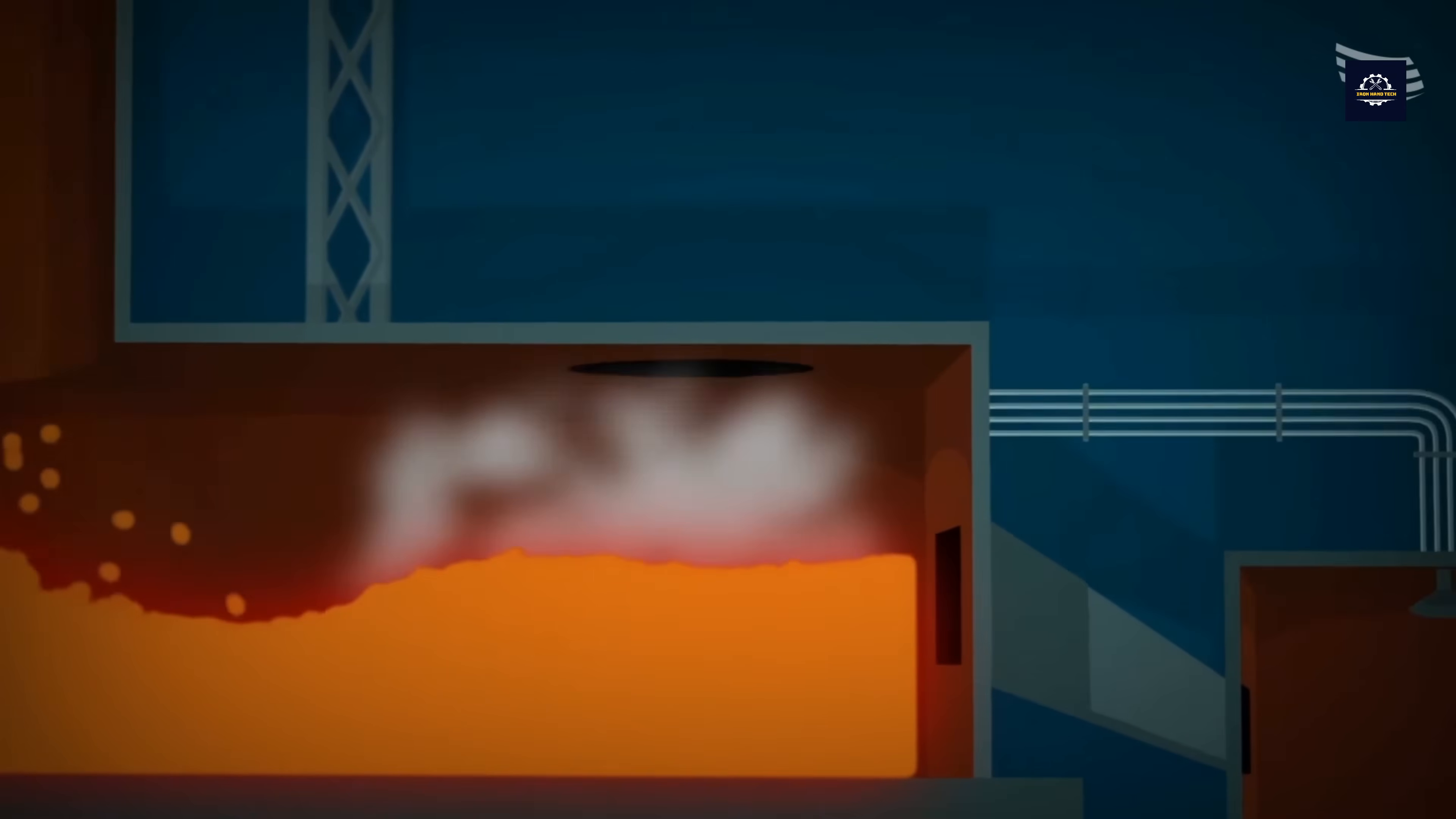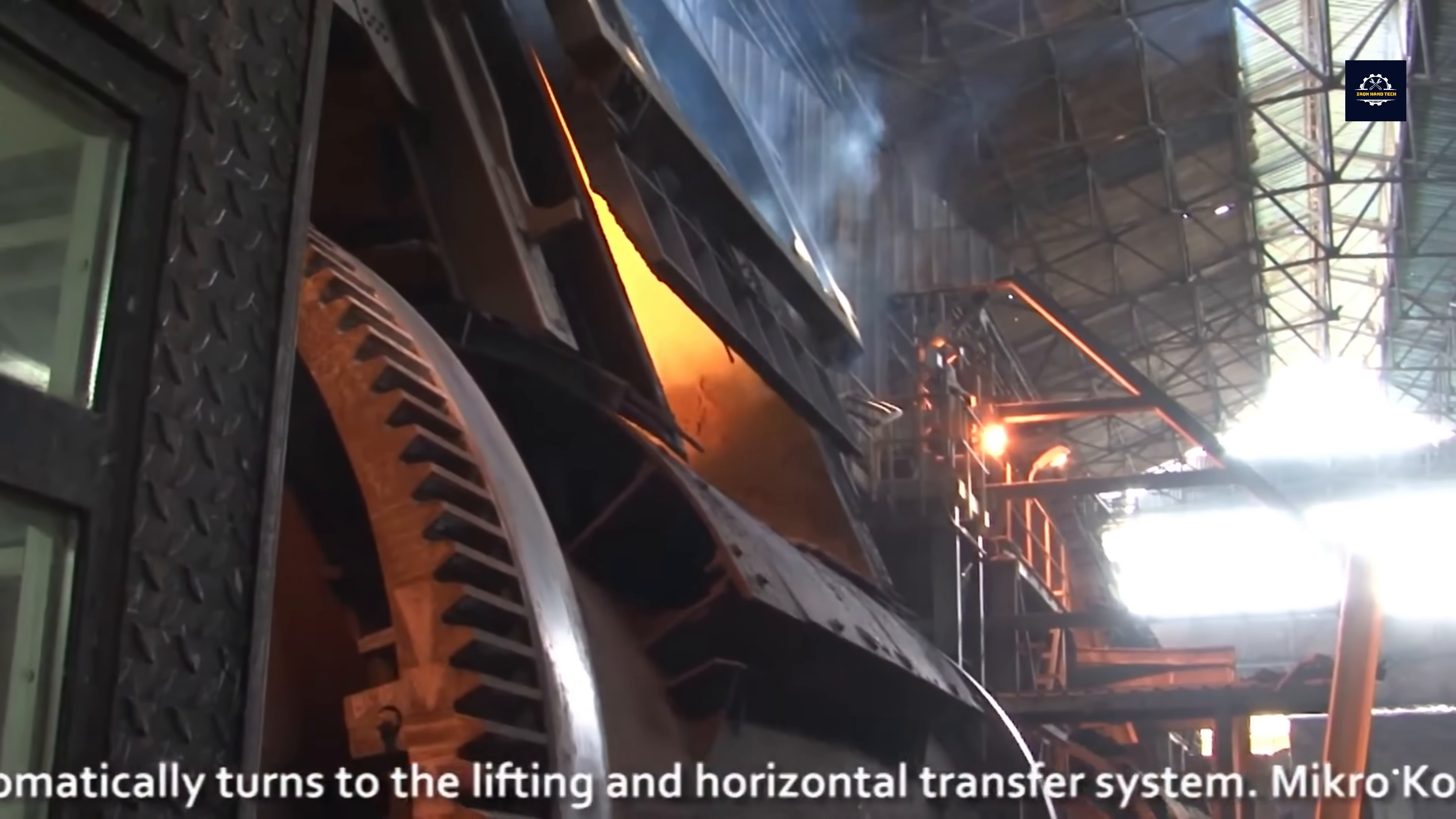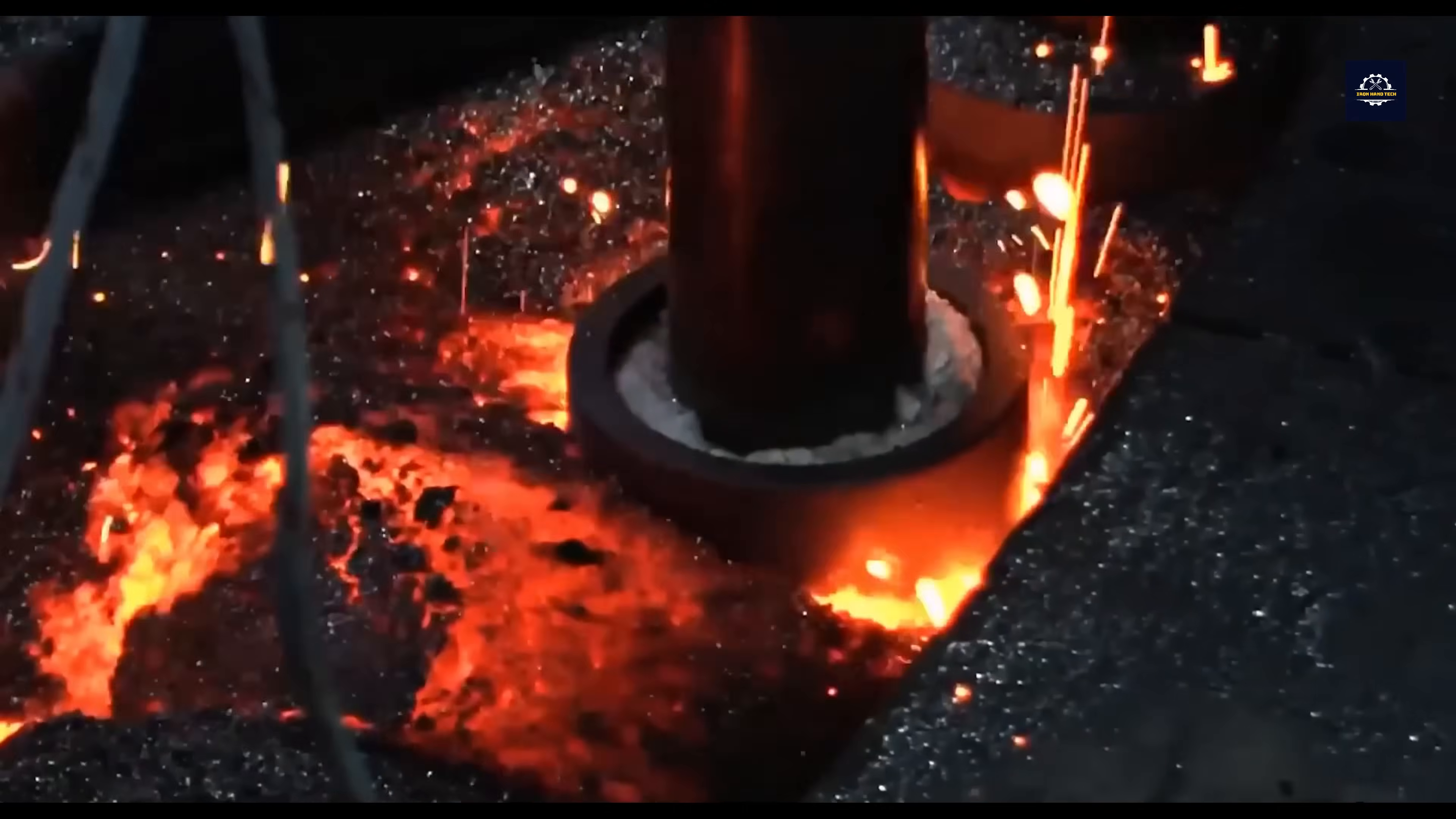The furnace is the heart of the metal recycling process. It uses gas or electricity to generate the high temperatures needed to melt the copper evenly. This process doesn't happen quickly, but it is certain copper needs time to shed its impurities and reach its purest state.